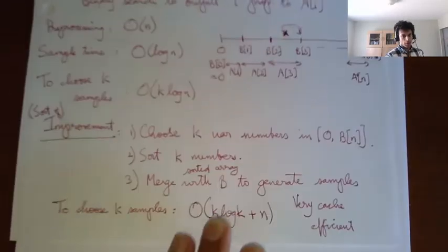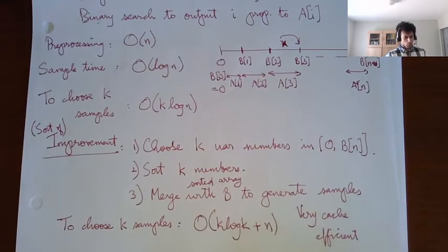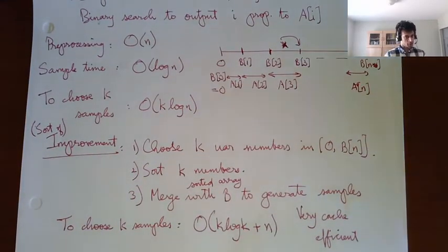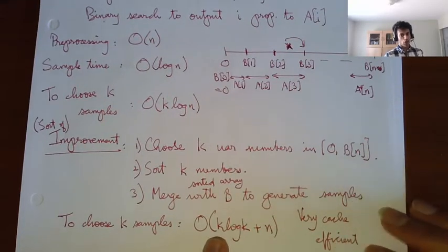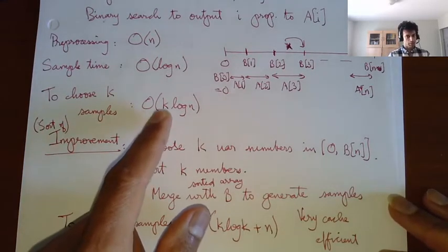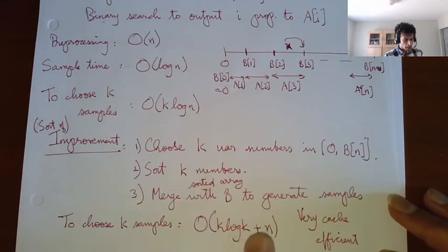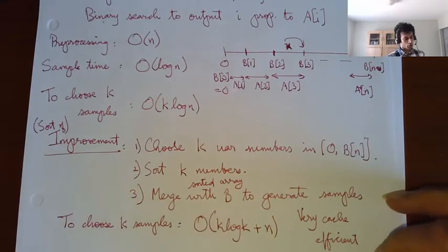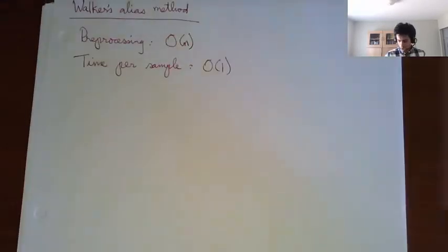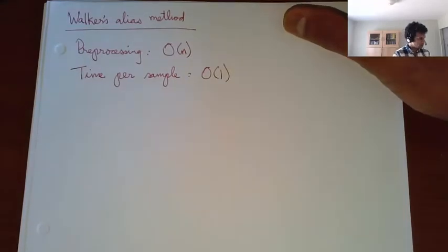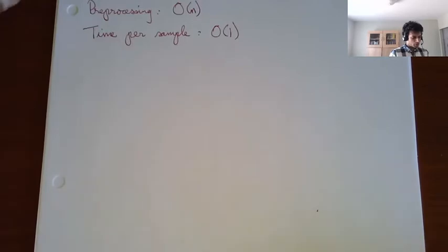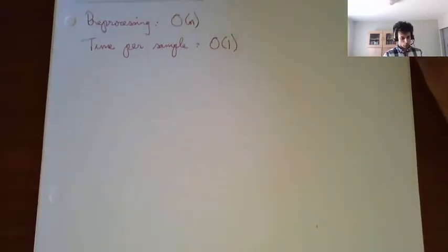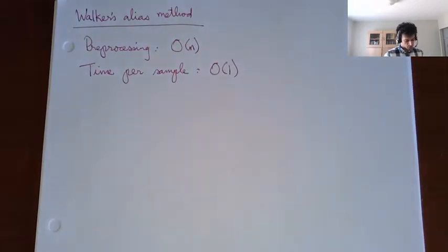There's another method which is somewhat simpler — you don't need to do binary search. You just have to merge sorted arrays. That's the same preprocessing, but to choose k samples you need k log k plus n. So that's a plus n which makes it seemingly more efficient, and this method is highly cache efficient because merging sorted arrays is extremely efficient. What I will sketch out is Walker's alias method, which has O(n) preprocessing and O(1) time per sample.